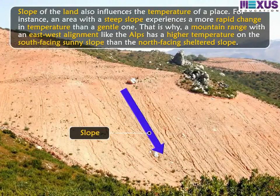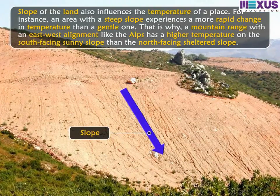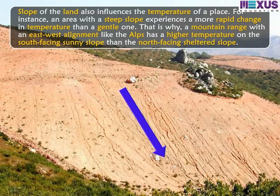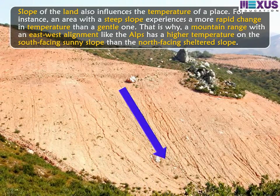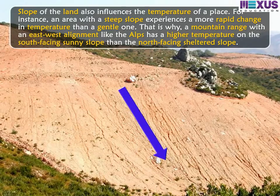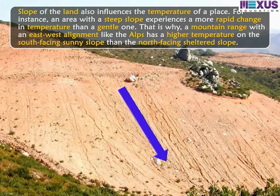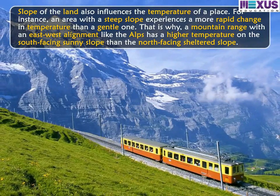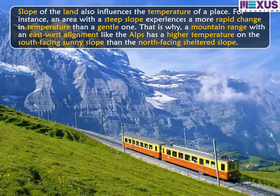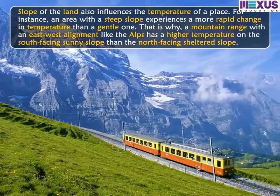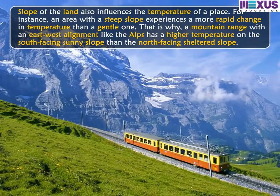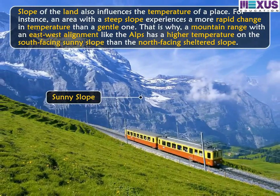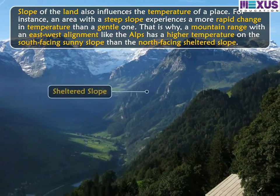The slope of the land also influences the temperature of a place. An area with a steep slope experiences a more rapid change in temperature than a gentle one. That is why a mountain range with an east-west alignment, like the Alps, has a higher temperature on the south-facing sunny slope than on the north-facing sheltered slope.